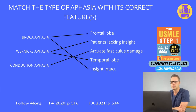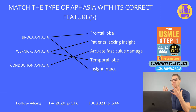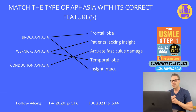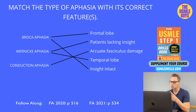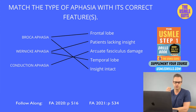Aphasia is a term describing some sort of language deficit, characterized by the inability to either express or understand language. This is most often due to injury to the dominant cerebral hemisphere — don't forget that. Dysarthria is a term describing a motor inability to produce speech; this is a movement disorder.